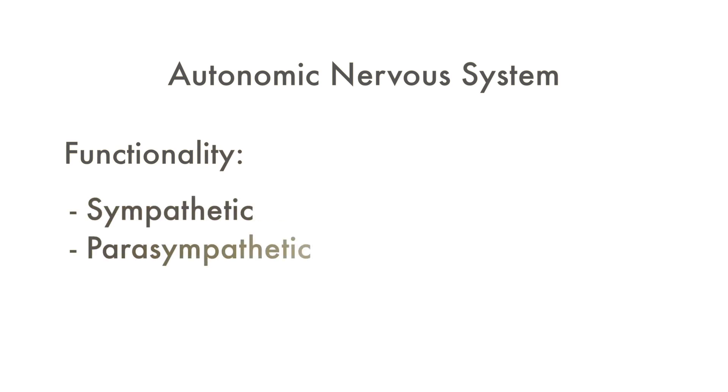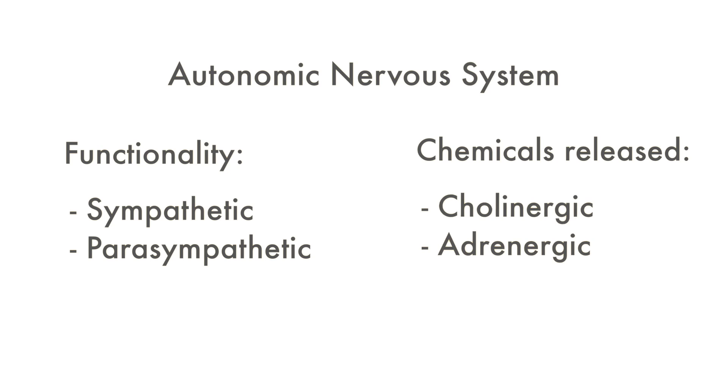The nervous system of our body is divided into the central and the peripheral nervous systems. The peripheral nervous system consists of the autonomic and the somatic nervous system. The autonomic nervous system can be classified in two ways: based on functionality, the autonomic nervous system can be divided into the sympathetic and the parasympathetic systems. Based on the chemicals released, the autonomic nervous system can be divided into the cholinergic or adrenergic system. Please understand that the sympathetic and parasympathetic systems are not the same as the adrenergic and cholinergic systems.